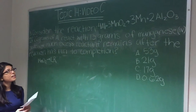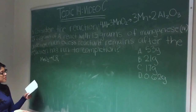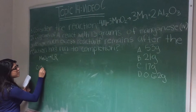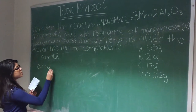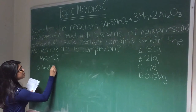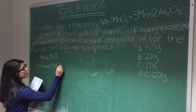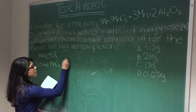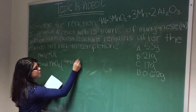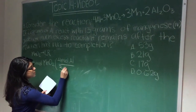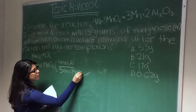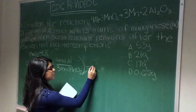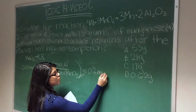The question asks for the amount of excess reactant remaining after the reaction has run to completion. We take 0.15 moles of manganese oxide and use this to figure out the moles of aluminum used in the reaction. Multiply by the ratio of aluminum to manganese oxide, which is 4 to 3: 4 moles of aluminum per 3 moles of manganese oxide. This gives us 0.2 moles of aluminum consumed.